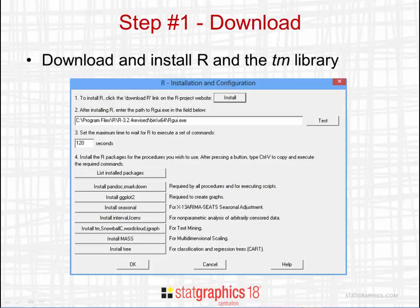The first step in using the StatGraphics 18 text mining procedure is to download and install R and the TM library. There's a selection on the R interface menu within StatGraphics that displays this dialog box. To install R, you first need to press the install button and follow the instructions, which are self-explanatory. Then install several packages: pandoc and R Markdown, ggplot2, and the TM, Snowball, wordcloud, and iGraph libraries. There's a separate video about downloading and installing R in case you have any problems.